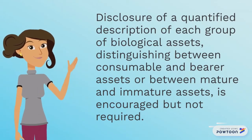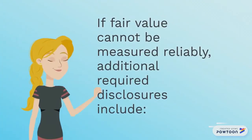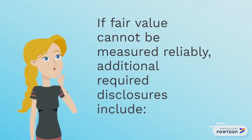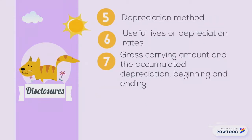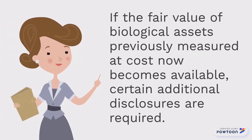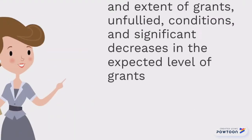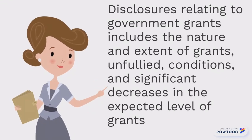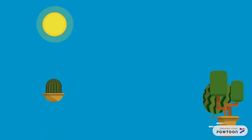Disclosure of a quantified description of each group of biological assets, distinguishing between consumable and bearer assets or between mature and immature assets, is encouraged but not required. If fair value cannot be measured reliably, additional required disclosures include: description of the asset, an explanation of the circumstances, a possible range within which fair value is highly likely to fall, gain or loss recognized on disposal, depreciation method, useful lives or depreciation rates, gross carrying amount, and accumulated depreciation at beginning and ending. If the fair value of biological assets previously measured at cost becomes available, certain additional disclosures are required. Disclosures relating to government grants include the nature and extent of grants, unfulfilled conditions, and significant decreases in the expected level of grants.